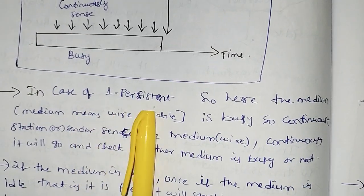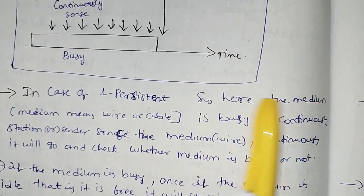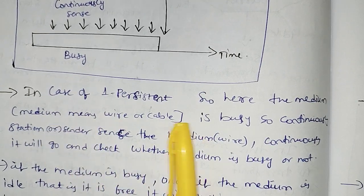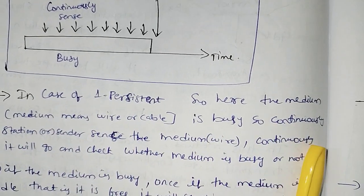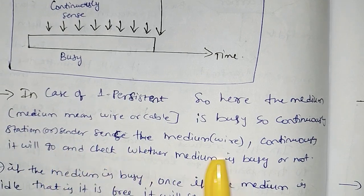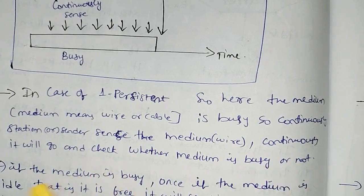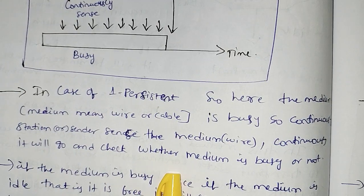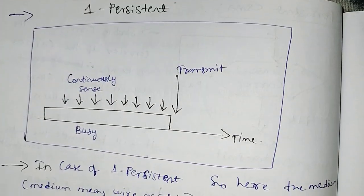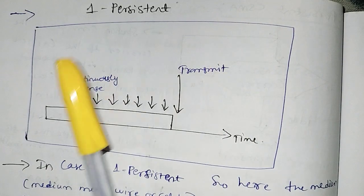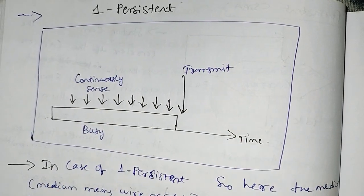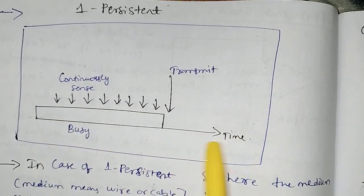In one persistent CSMA, if the medium — the wire or cable — is busy, the station continuously senses it to check whether it is busy or idle. Once the medium becomes idle, the station will send the frame.